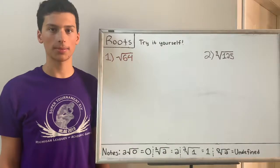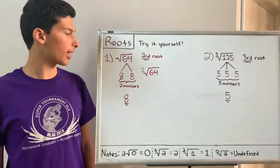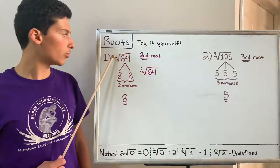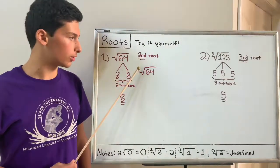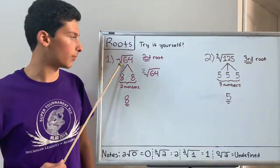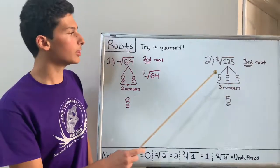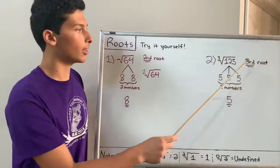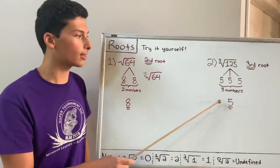Here are some practice problems. Pause the video and try to work them out. For the square root of 64, remember when there's no radical, you assume it's 2. Since this is the second root, you need two numbers that are the same and multiply to get 64 — the answer is 8. For the third root of 125, there's a 3 as the radical, so you need three of the same number that multiply to get 125. The answer is 5.